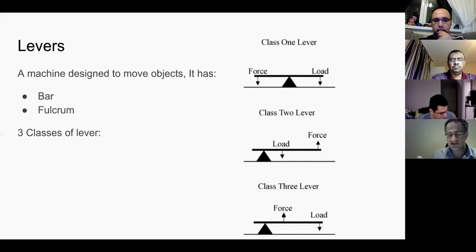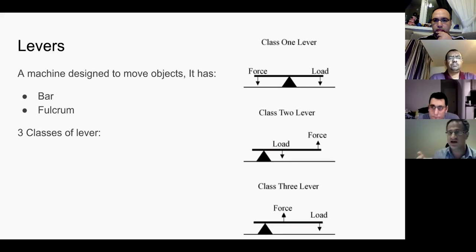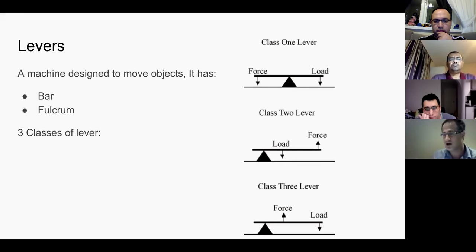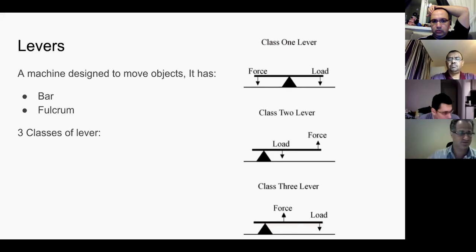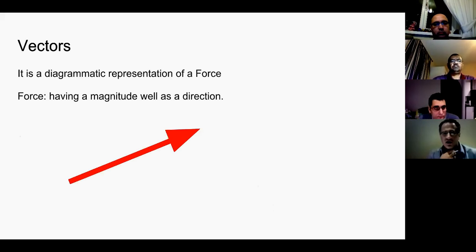Next: levers. A lever is a machine designed to move objects — it has a bar and a fulcrum. Class one lever: the force and the load are on opposite sides of the fulcrum. Class two lever: the force is further away than the load from the fulcrum — an example is a wheelbarrow. Class three levers: the force is closer to the fulcrum while the load is further away — for example, your elbow joint with your biceps.